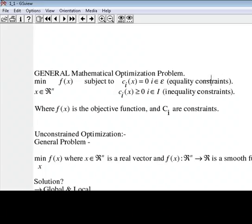These constraints are divided into two parts. One is known as equality constraints: c_i(x) equals zero for i belonging to ε. And c_i(x) is greater than or equal to zero for i belonging to I, the inequality constraints. Here's our objective function f(x) which we want to minimize subject to constraints c_i. This was our general optimization problem.